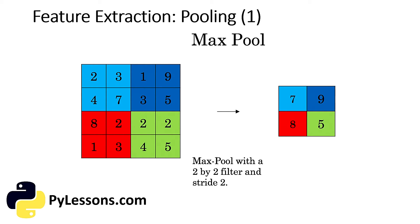There are two types of pooling: max pooling and average pooling. Max pooling returns the maximum value from the portion of the image covered by the kernel. Max pooling also performs as a noise suppressant—it discards the noisy activations altogether and also performs denoising along with dimensionality reduction.